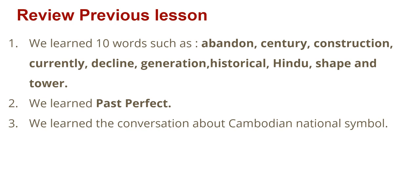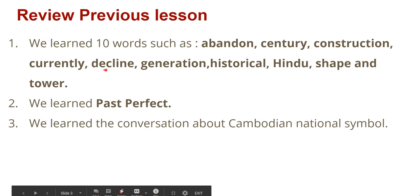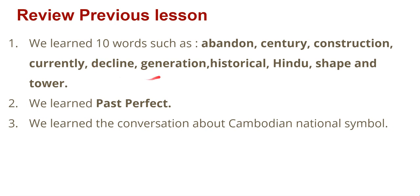Abandon means to leave something or a place forever. Century means 100 years. Construction means the action of building something. Currently means now, in the present. Decline means to decrease or become less and less. Generation refers to people of the same age. Historical means referring to history. Hindu is one of the religions. Shape is the physical appearance or physical form, and tower is a tall structure.